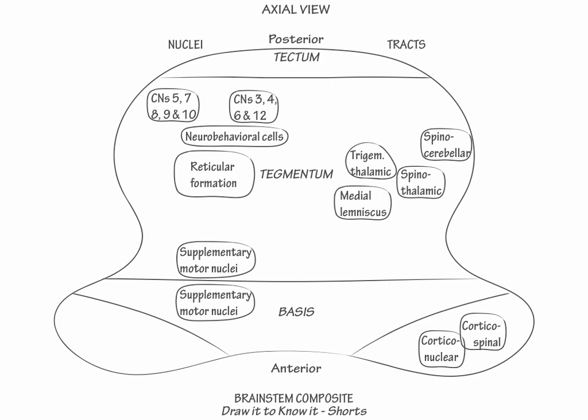In midline, label the medial longitudinal fasciculus. Next, label the cerebrospinal fluid space, which in the midbrain is the cerebral aqueduct, and in the pons and medulla is the fourth ventricle.